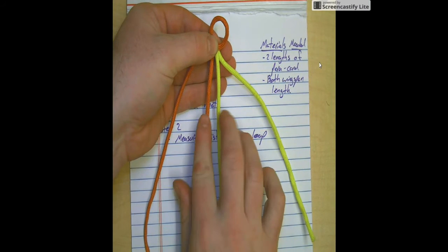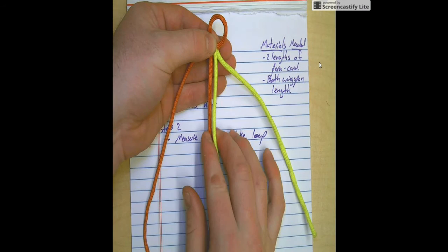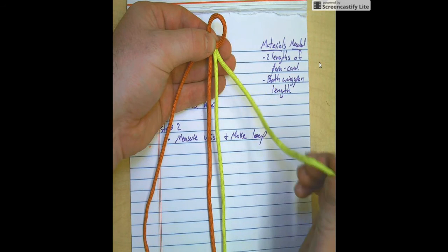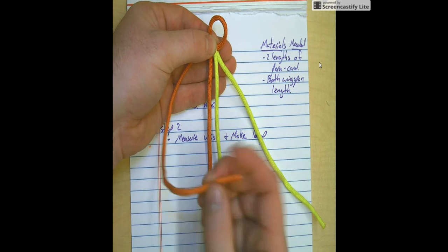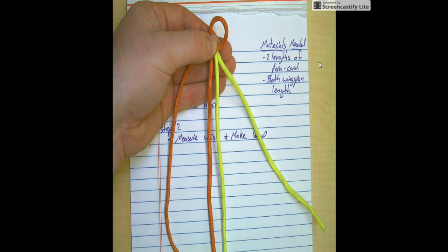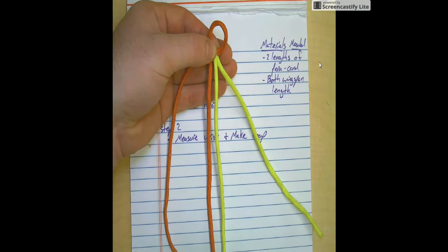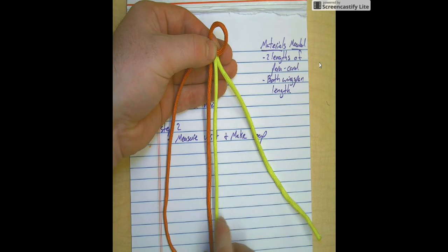You have your four strands now. You have two here in the center. This is what you're going to be wrapping around, and then you have your two working ends. With your two working ends, now you're going to be making the cobra stitch.